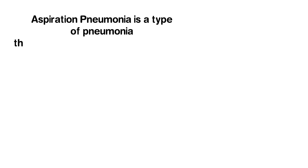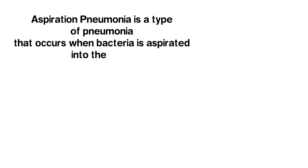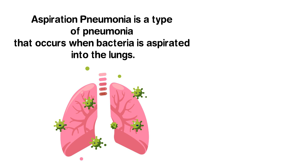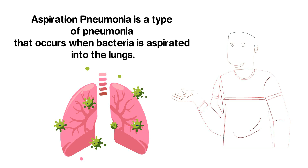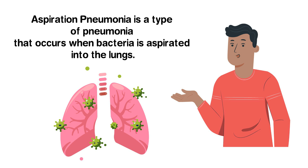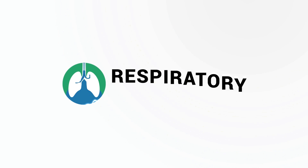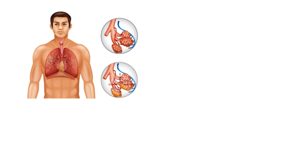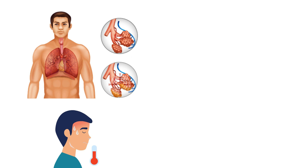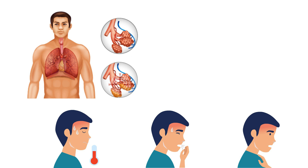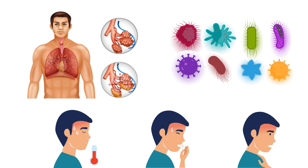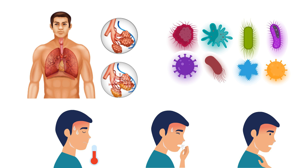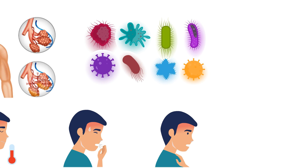Aspiration pneumonia is a type of pneumonia that occurs when bacteria is aspirated into the lungs. We created this video to cover the medical definition and provide a brief overview of this topic. Pneumonia is an infection that causes inflammation in the lungs and results in fluid build-up, fever, cough, and difficulty breathing. It's caused by a variety of different organisms including viruses, bacteria, fungi, and even parasites in some cases.